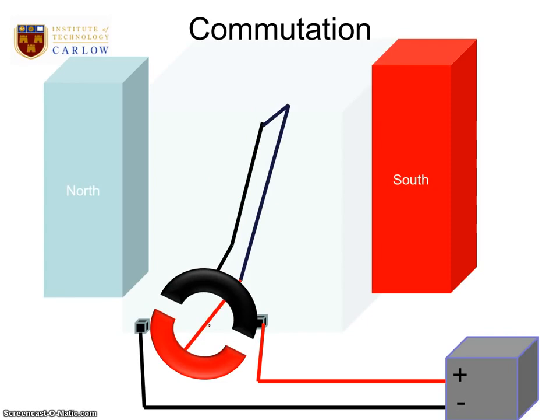So it brings it to here. Now we notice the current is going to go in through the black wire and come out on the red. In the previous plane, it was going in on the red and coming out on the black. Now it's going in on the black, coming out on the red. So we've changed the direction of the current.